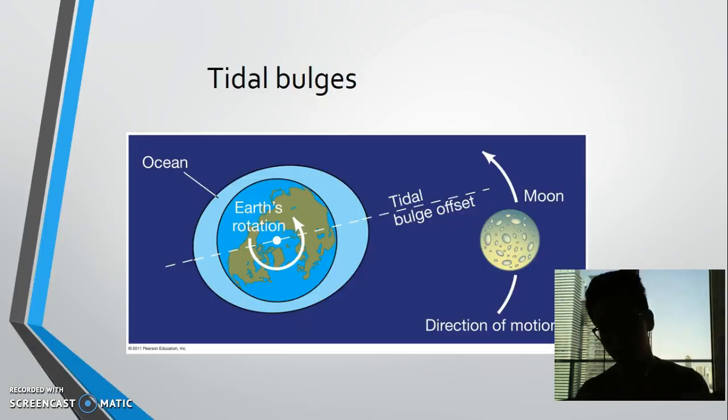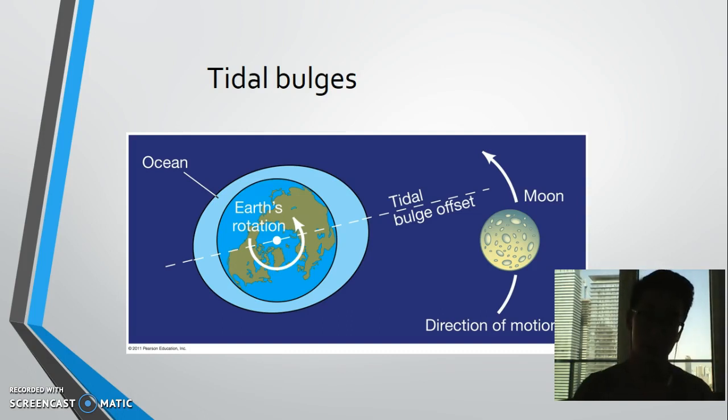So the moon exerts a gravitational pull on the earth and this creates a tidal bulge because it pulls the water as well. And so the earth rotates dragging the water and this tidal bulge along with it, and therefore the tidal bulge slightly leads the moon.